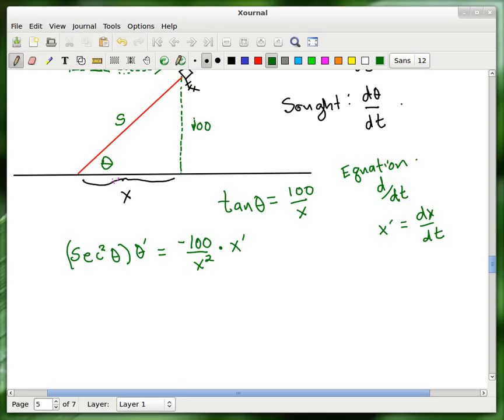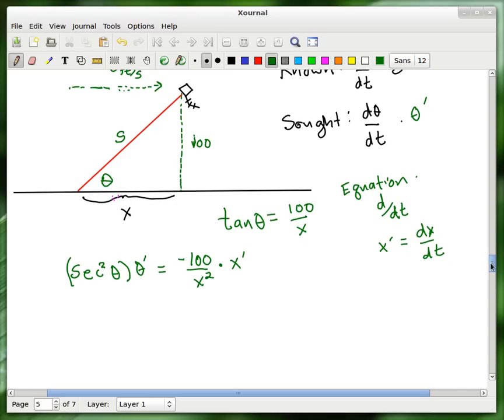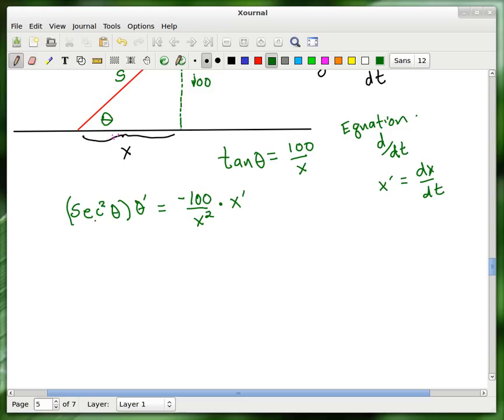All right. And so we're getting close, huh? So the thing that we want is this, dθ/dt, which is the same thing as theta prime. So I just need to isolate that. It's really easy. So I just divide both sides by secant squared theta, which is the same thing as multiplying through by cosine squared theta. So it just puts a cosine squared theta over here. The reason is that secant and cosine are reciprocals. And so this is times minus 100 over x squared times x prime.